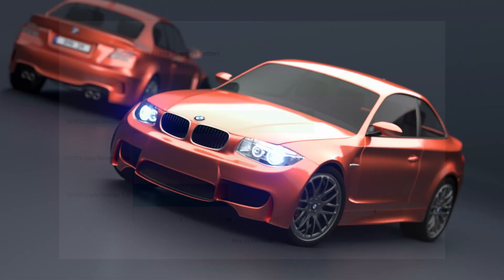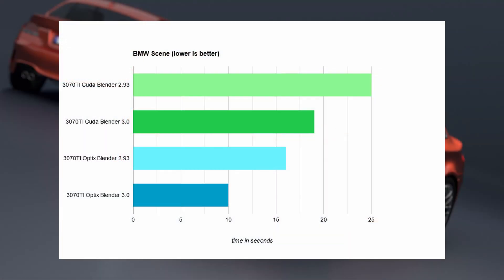First we have the iconic BMW render. We are seeing a 6-second jump for both CUDA and OptiX performance on the 3070 Ti, with Blender 3.0 taking only 63% and 75% of the time respectively. This is a pretty decent result — there has been a speed increase of about a quarter, and that's pretty good. But 6 seconds really isn't that much though, is it?